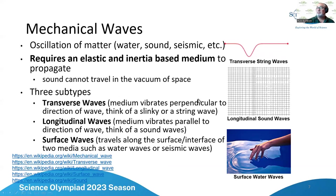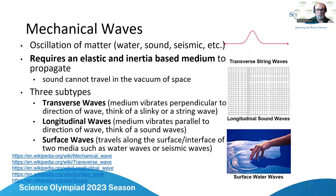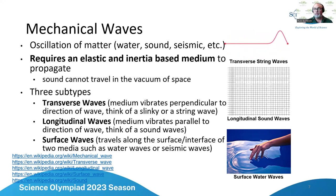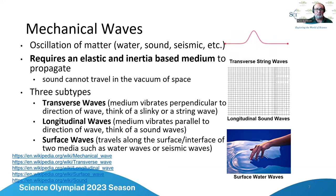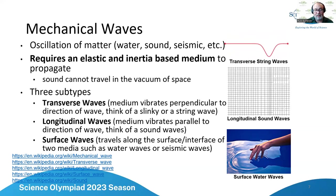Mechanical waves are oscillations of some type of matter — water, sound in air, or seismic waves where actual earth moves. They require an elastic and inertia-based medium to propagate — something that can actually be deformed somewhat.